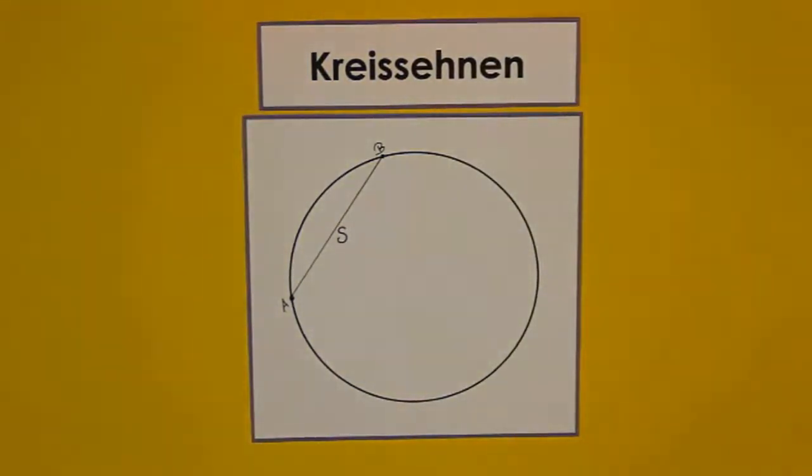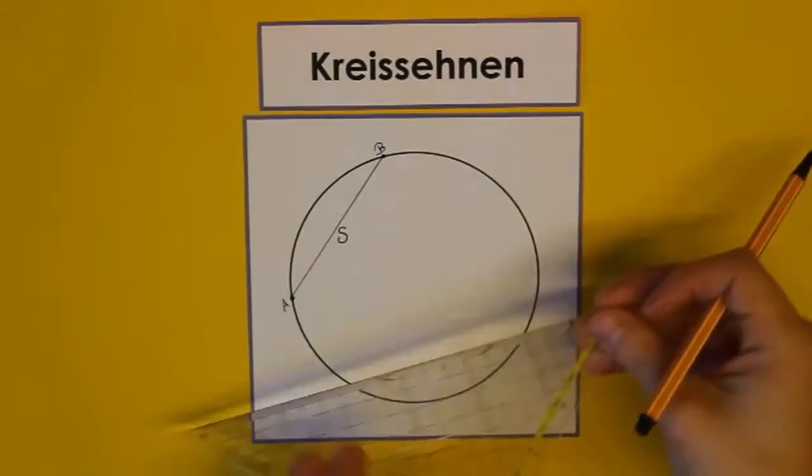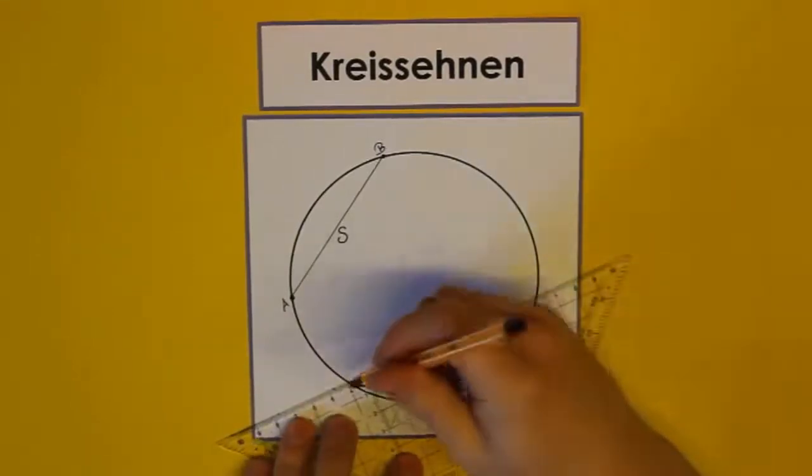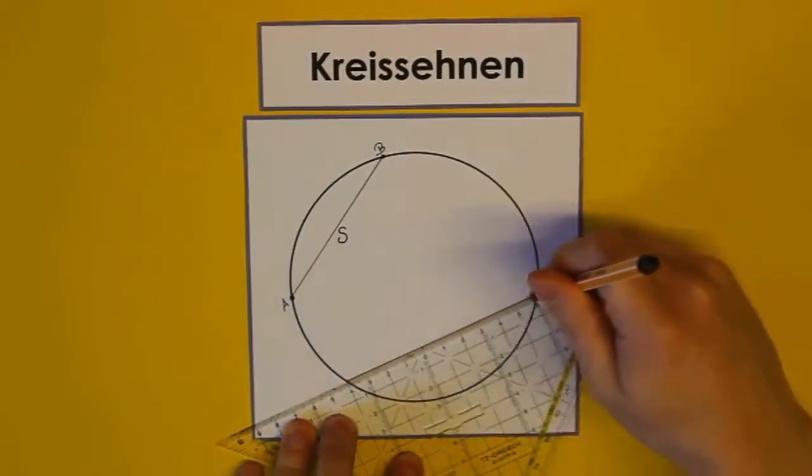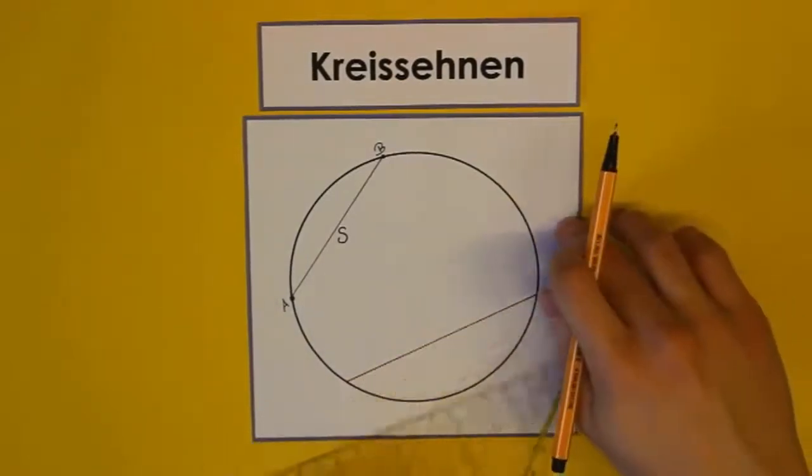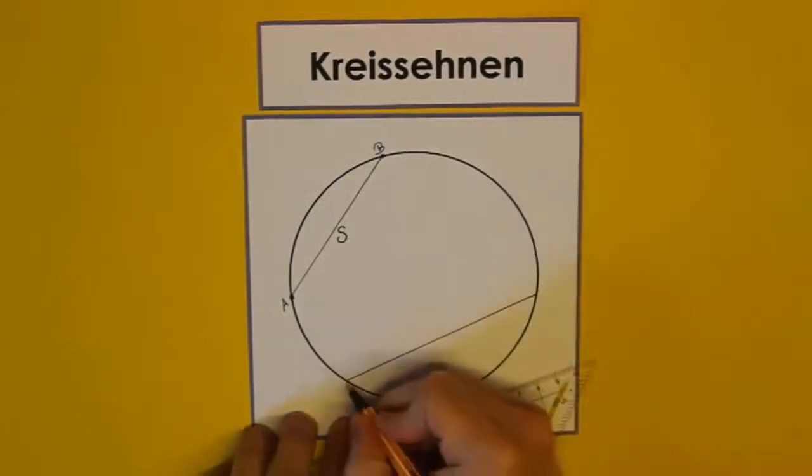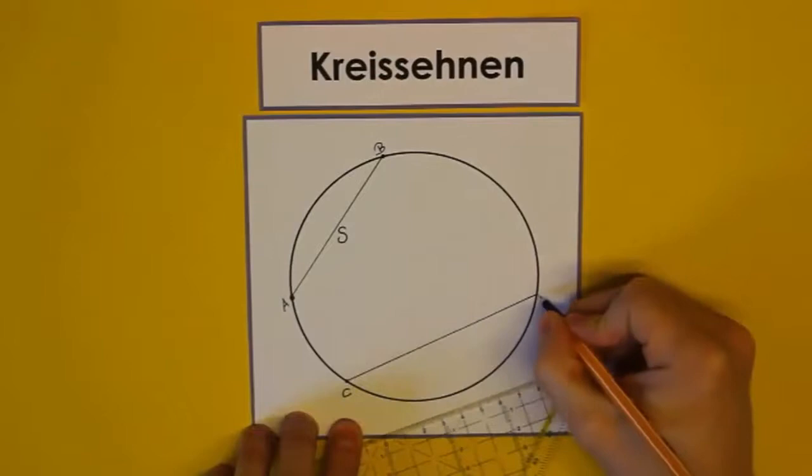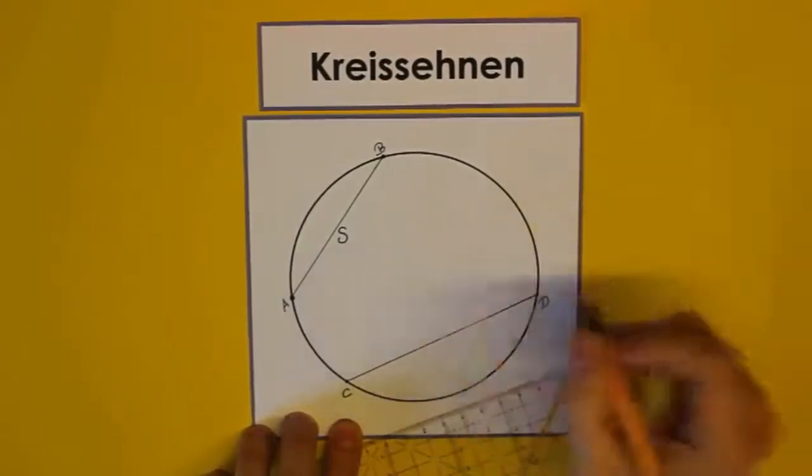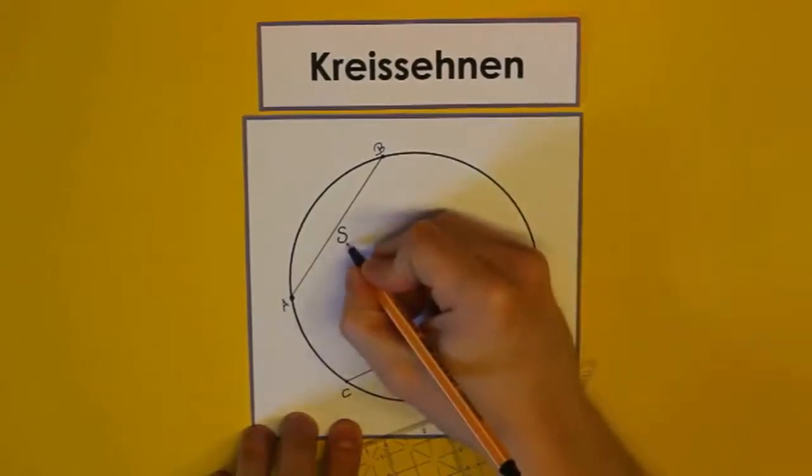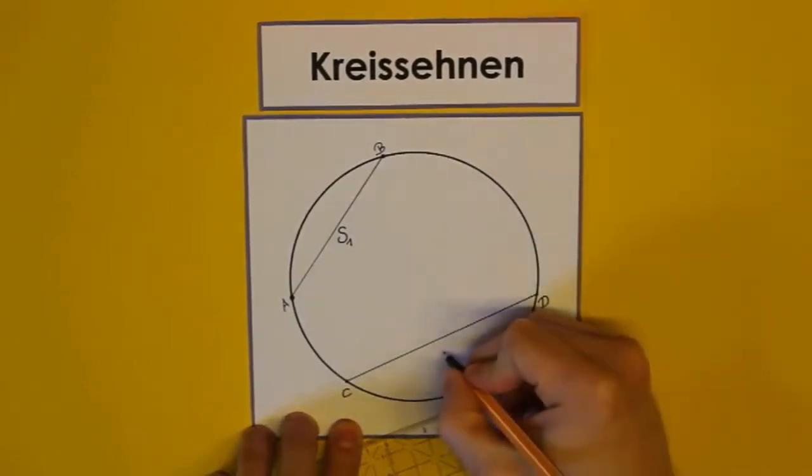Zeichnen wir am besten noch eine Kreissehne ein. Wichtig ist, dass die beiden Endpunkte für die Szene immer auf der Kreislinie liegen müssen. Wir verbinden jetzt diese Punkte und beschriften wir mit C und D, da wir A und B bereits vergeben haben. Da wir jetzt bereits eine Szene haben, die den Namen S trägt, benennen wir die erste, die alte Szene einfach in S1 um und die neue Szene nennen wir S2.